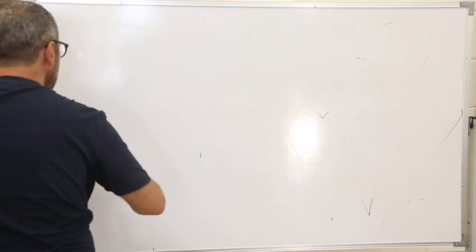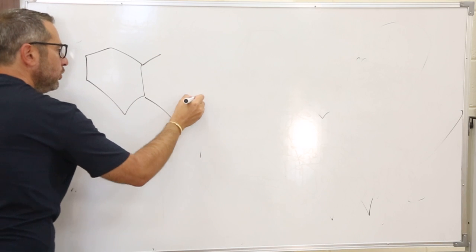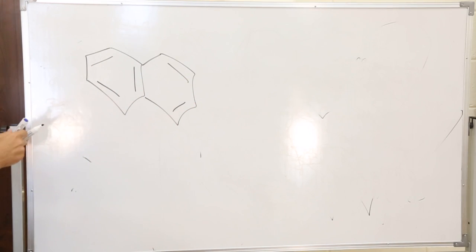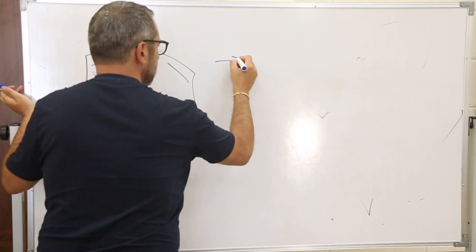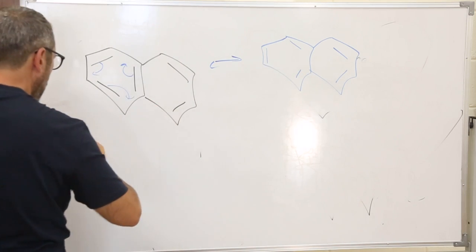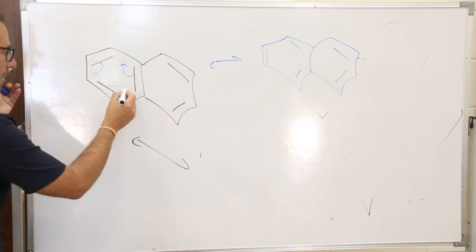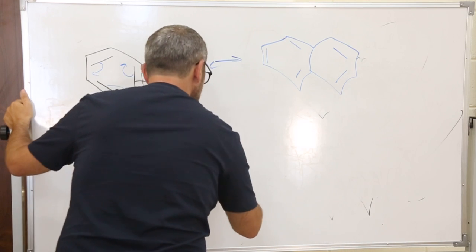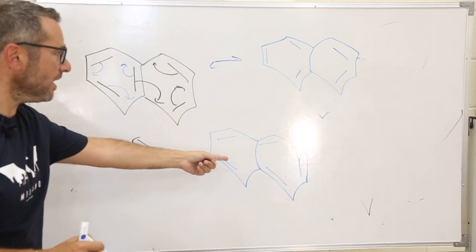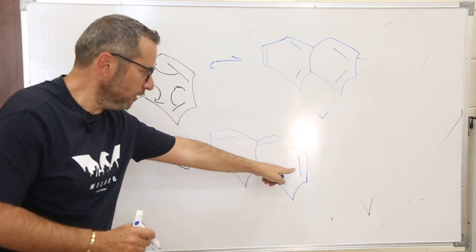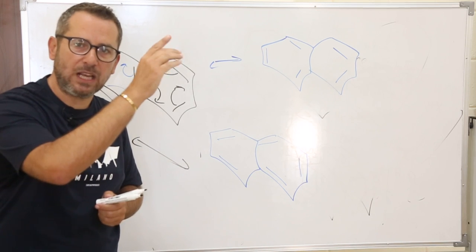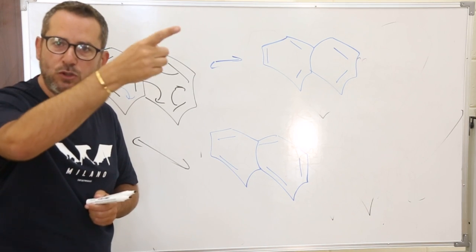How to draw resonance for naphthalene? Place the double bond in the middle of the first cycle and turn the double bonds in the first cycle — the second cycle remains intact, giving one resonance structure. Or move the first cycle and leave the second intact, giving another resonance structure. For a third ring, the double bond reaches the second and you turn it in the third. So for polynuclear aromatic hydrocarbons, you place the double bond in the middle, then turn it sequentially through each ring.